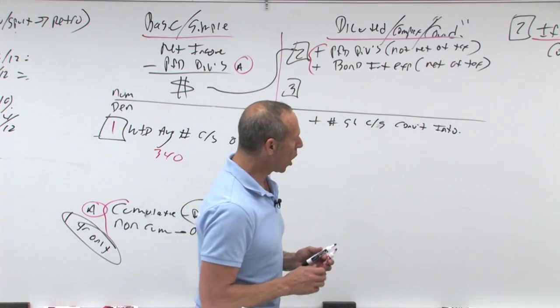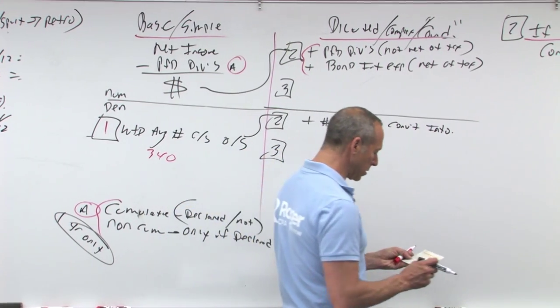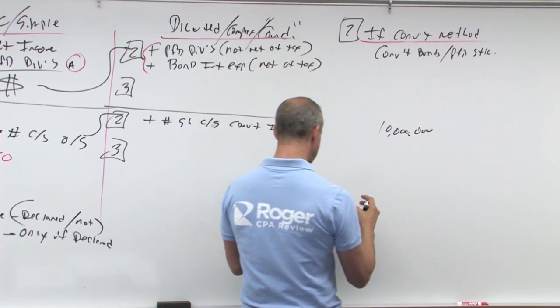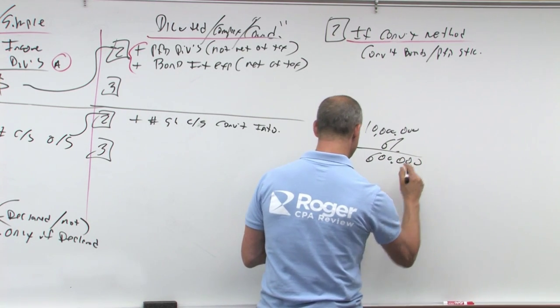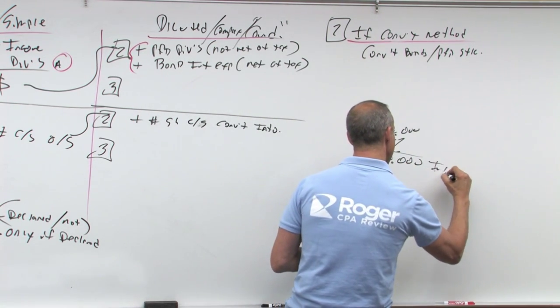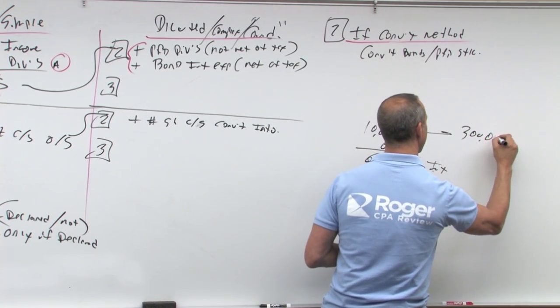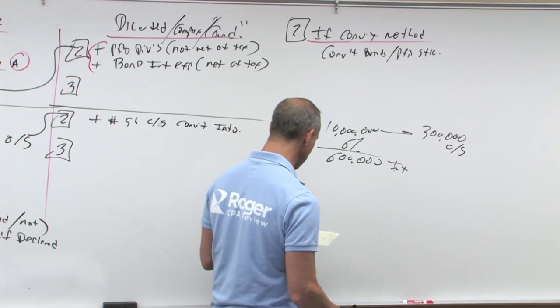Alright, let's say for example I have bonds, and let's say I've got a bond face value is $10 million. Let's say the interest rate is 6%, that's $600,000. So $600,000 is the interest that I would be paying. And let's say these bonds are convertible into 300,000 shares of common stock.